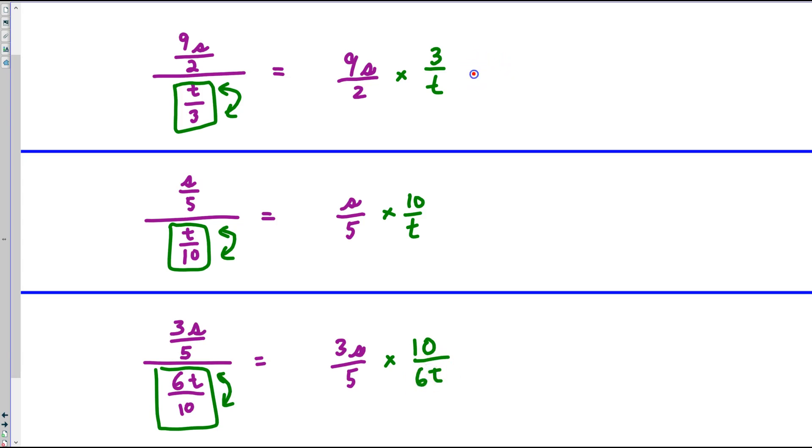If we want, we could go ahead and calculate and say we've got an s divided by t, and then combine all of the values. 9 times 3, that's 27, over 2.